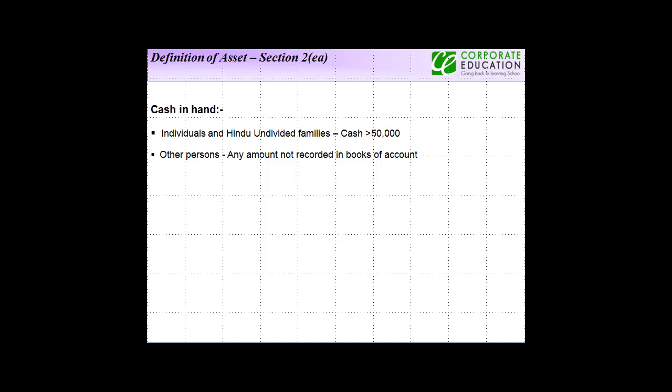Moving forward, we now look at the next item which can be considered as an asset for wealth tax purposes, and this is cash in hand.